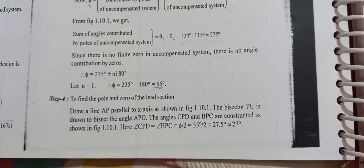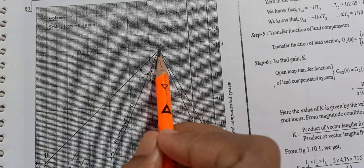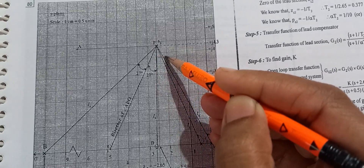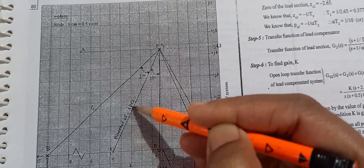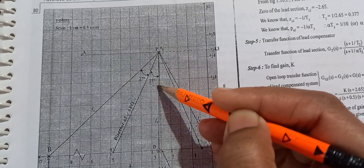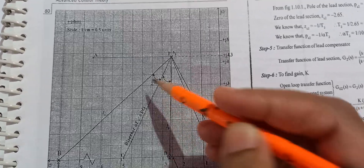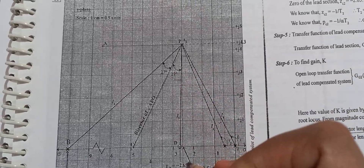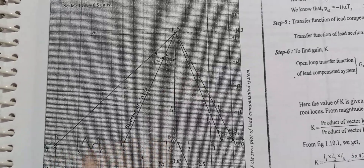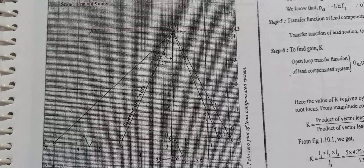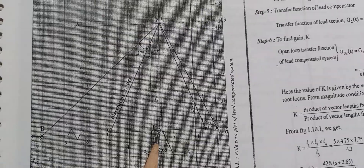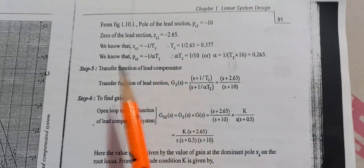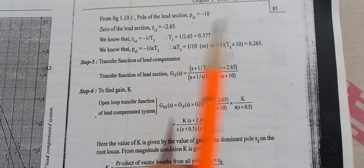We draw the horizontal line and the bisector line from the dominant pole. The bisector angle is 55/2 degrees, measured below the horizontal axis. The right side of the bisector gives the zero location and the left side gives the pole location. The lead compensator pole and zero are at minus 1/d2 and minus 1/(alpha * d2), giving us the alpha value for the lead compensator.